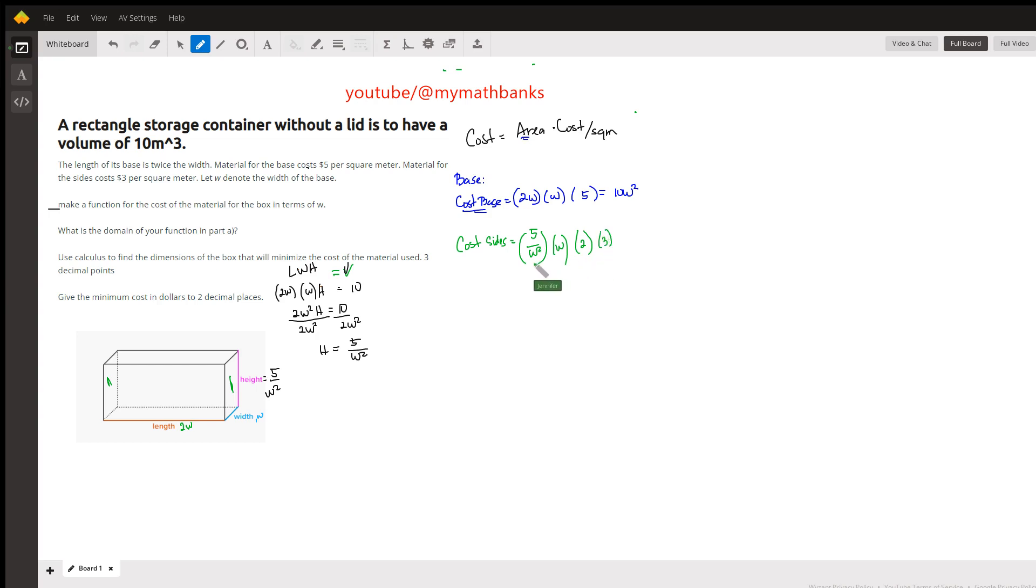All right, so I hope you're following. This one right here is one side, you multiply by 2 to make two sides, so that's the total area of the two sides, and then you multiply with the cost per square meter in the side. So now this w will cancel with one of these w, 5 times 2 times 3, that's 30 over w.